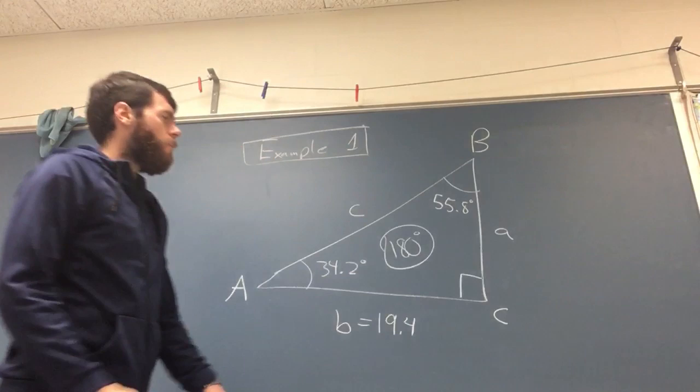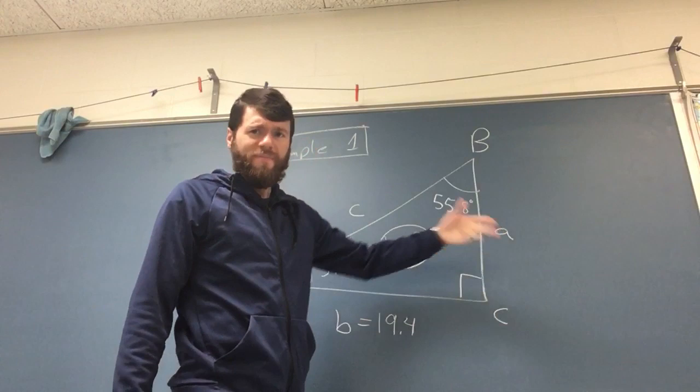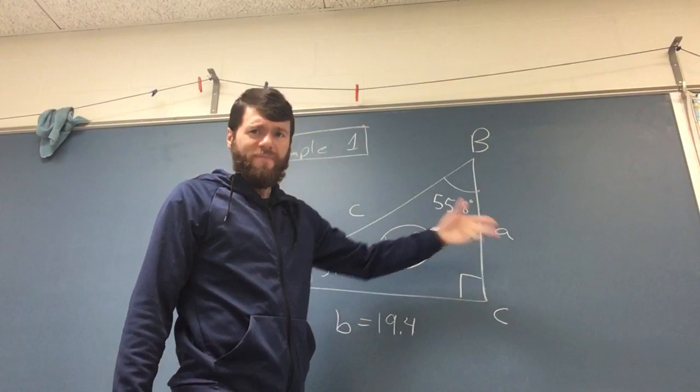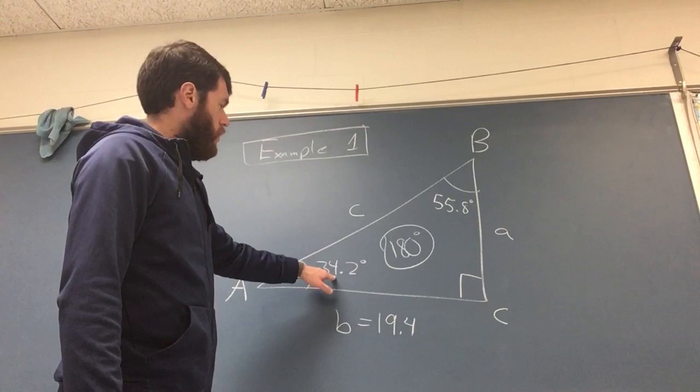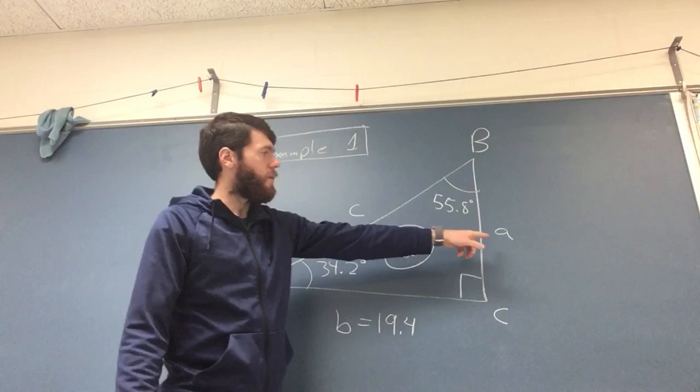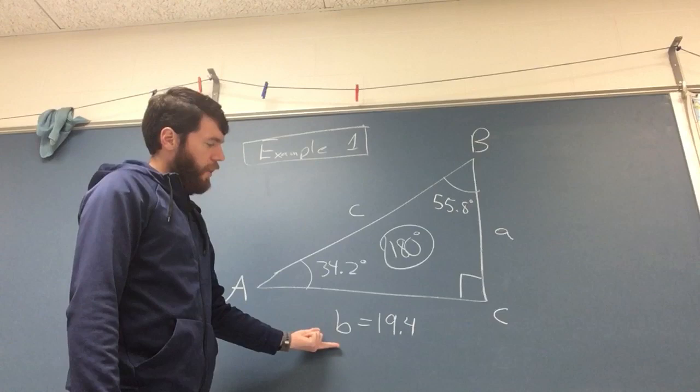Now how would I find the sides like C or A? This is something which is a stumbling block on the first quiz for a lot of people. Let's just start with, I don't know, pick one. Let's go with A. If this angle is what I have, I can say, okay, relative to this angle, A is opposite and I have been given, relative to this angle, the adjacent.